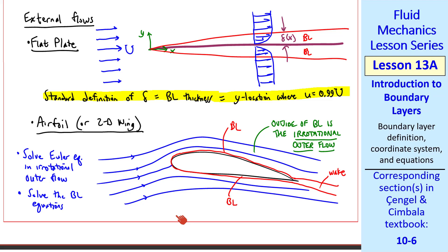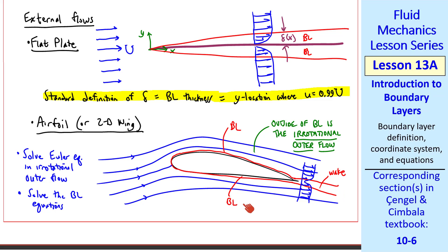The velocity profile in the wake is also a thin layer, so we can solve this portion of the flow with the boundary layer approximation. A boundary layer does not require a wall — we can have a free shear flow like a wake or a jet. And as long as it changes slowly in the y direction compared to the x direction, we still call it a boundary layer.